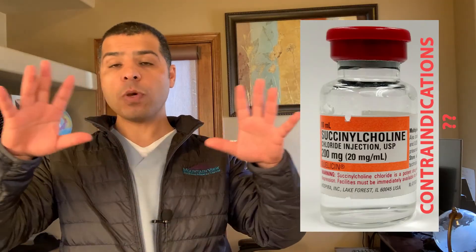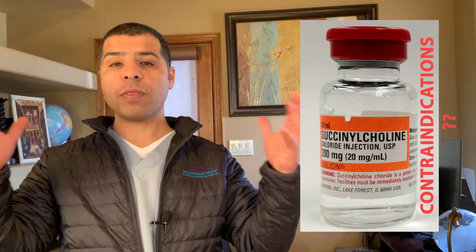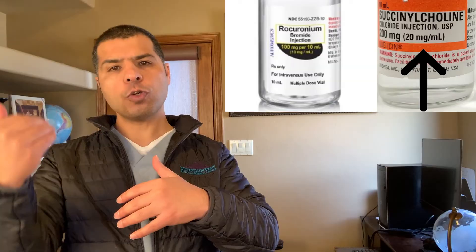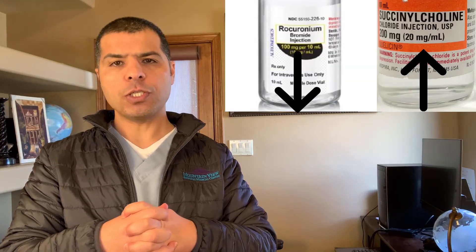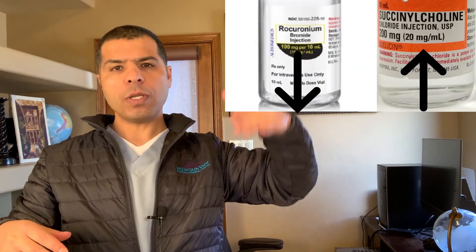I like rocuronium and use it a lot — it saves me the headache of thinking through succinylcholine contraindications. I've never used vecuronium because it requires a priming dose about 3 minutes before giving the second dose, which is impractical in real-life emergencies. It is safe to use neuromuscular blocking agents in myasthenia gravis — you just need to adjust the dose. With succinylcholine, increase the dose to 2 mg/kg; with rocuronium, decrease the dose to 0.6 mg/kg.